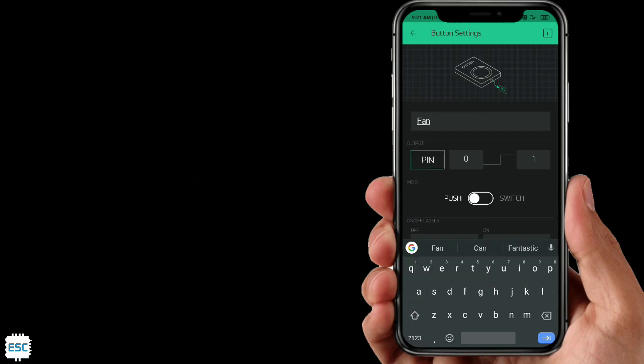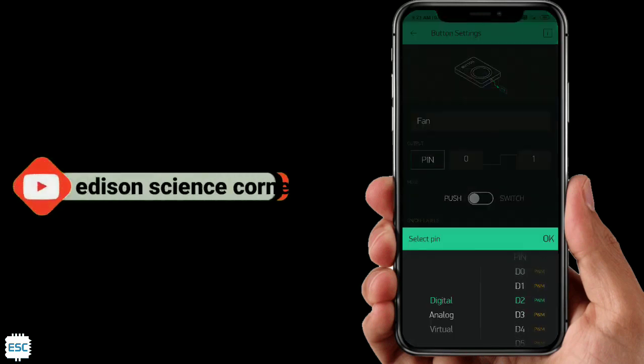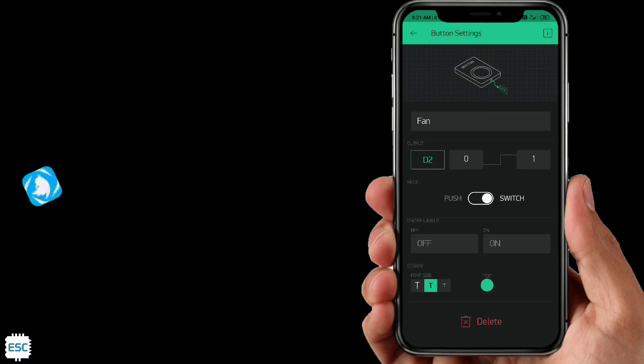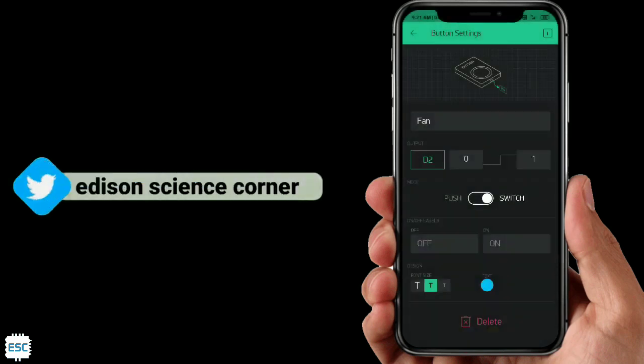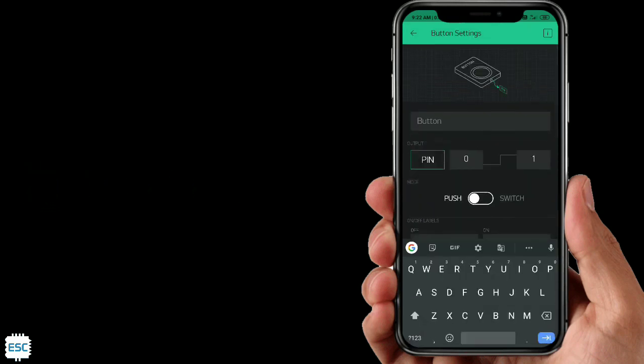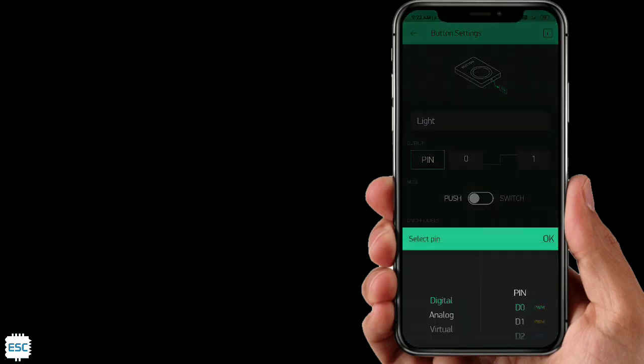Now give a button name. I'm giving fan, then I selected D2 pin, then I selected switch mode. You can change color. Do the same for the second button. I'm giving light as name and select D4 pin.